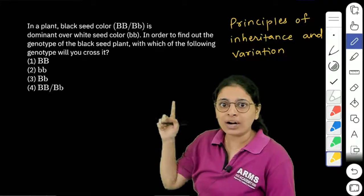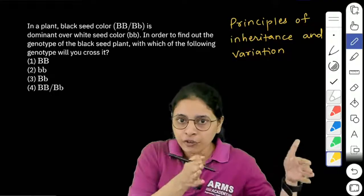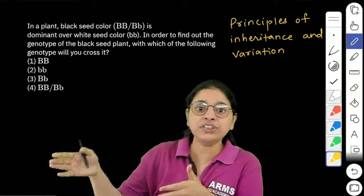Out of these two, what is the exact genotype of the black-seeded plant? If we take this plant, with which other plant do we have to cross it?